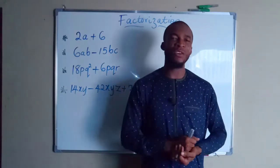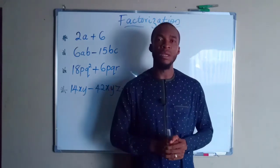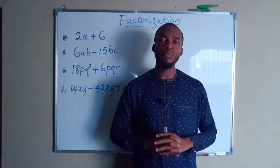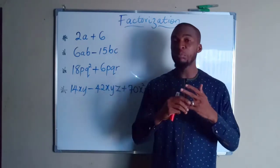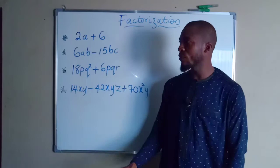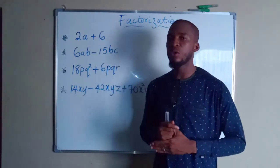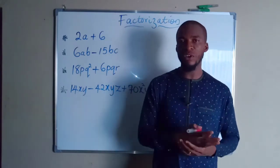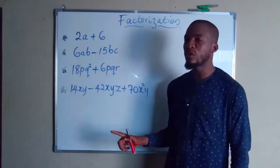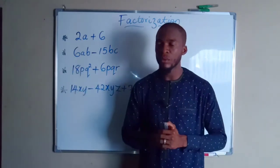Today I will show you how to factorize an algebraic expression. At elementary level there are three things you can do to an algebraic expression: you either factorize, simplify, or solve. But today we are going to talk about factorization — what we call GCF, the Greatest Common Factor, or HCF, Highest Common Factor. They mean the same thing. Whenever you are asked to factorize an algebraic expression, you should always group numbers together and letters together.